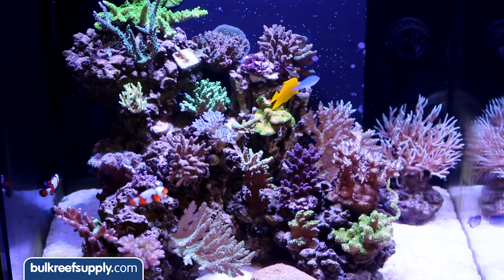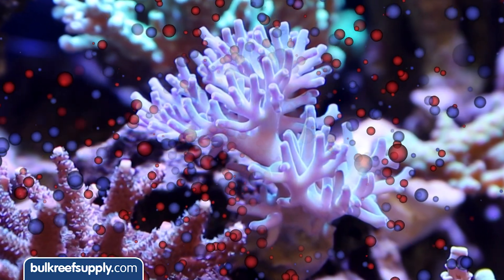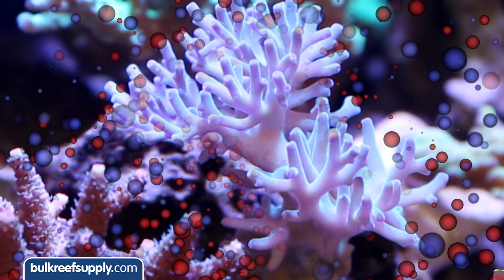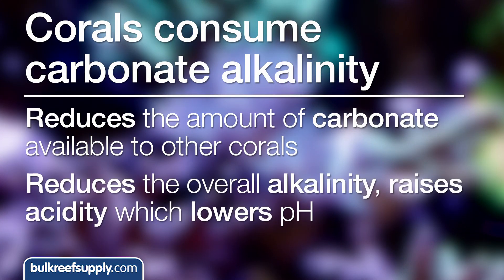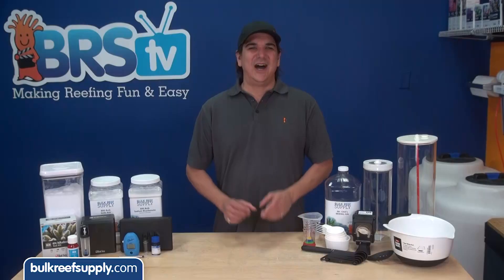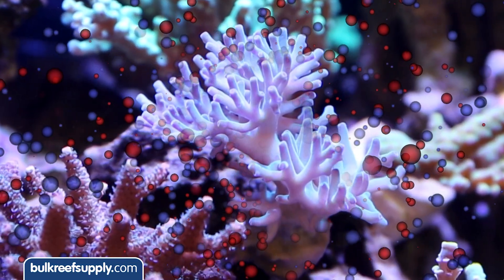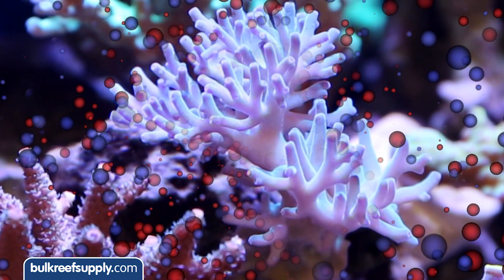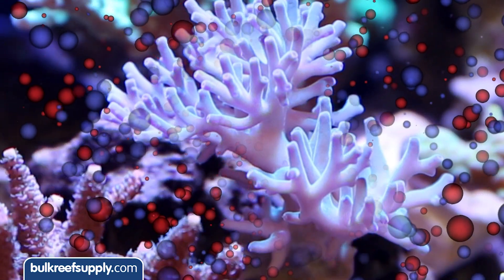If you have a reef tank which contains corals there is a second element to the equation. Many of the living corals in the tank are pulling alkalinity out of the surrounding water in the form of carbonate to build their skeletons. Corals consuming the carbonate alkalinity has two fairly obvious effects: first it reduces the amount of carbonate available to other corals for their growth and health, but it also reduces the overall alkalinity and eventually results in an increase of acidity of the water and reduces the pH. In the reef tank we are almost always referring to carbonate alkalinity because bicarbonate and carbonate make up a vast majority of the alkalinity in a typical reef tank.